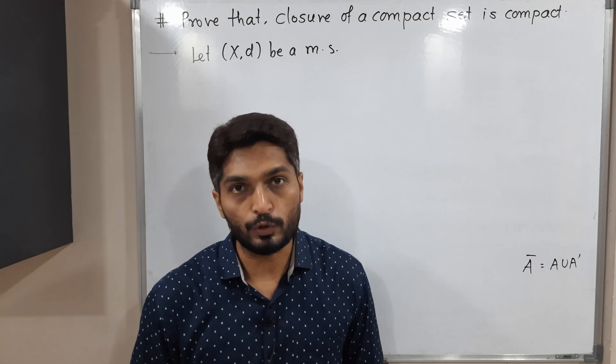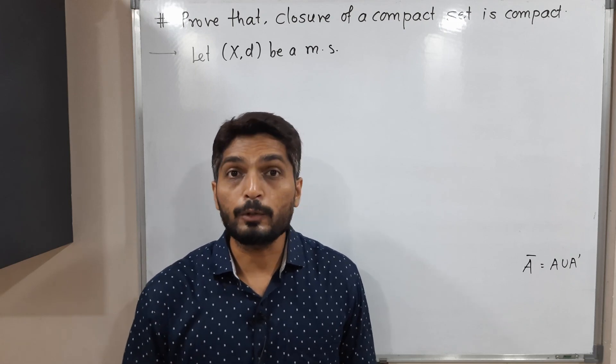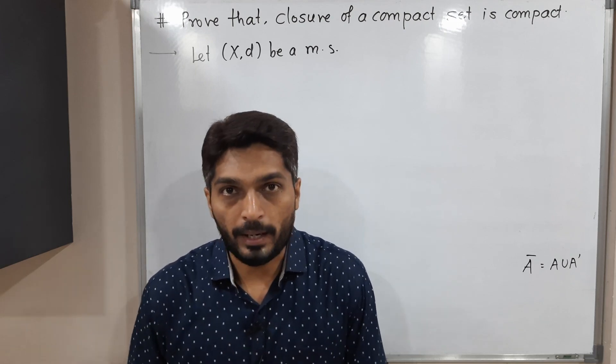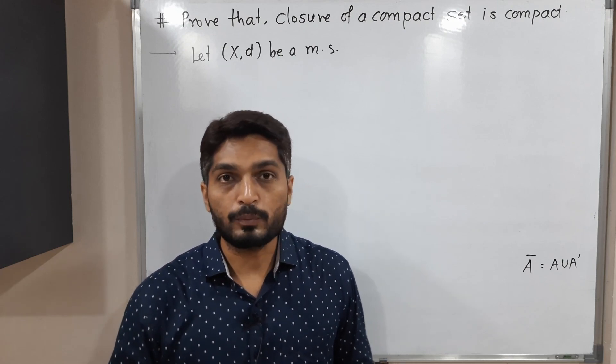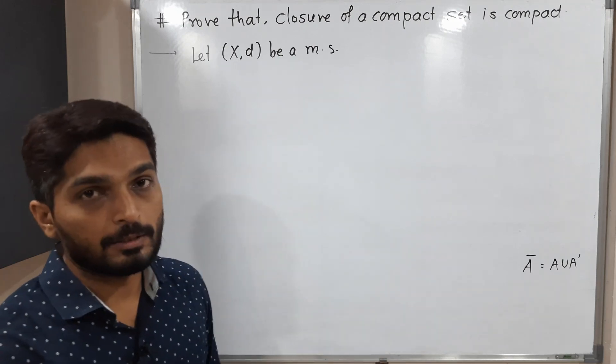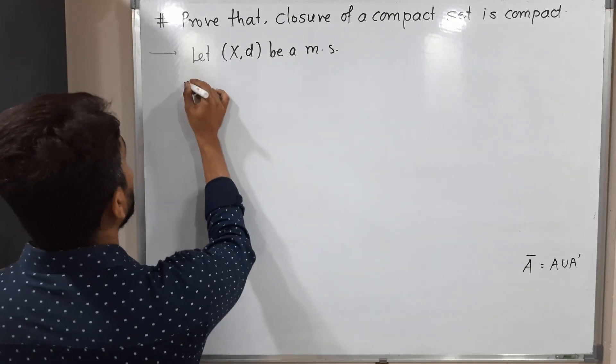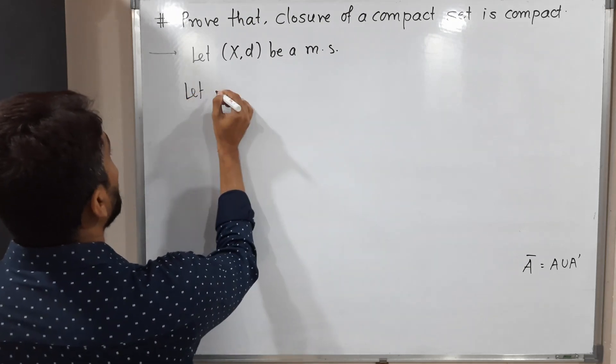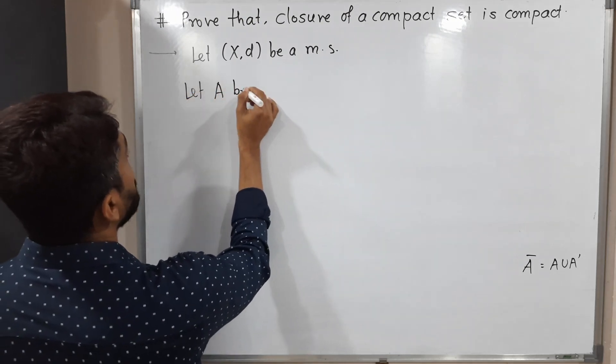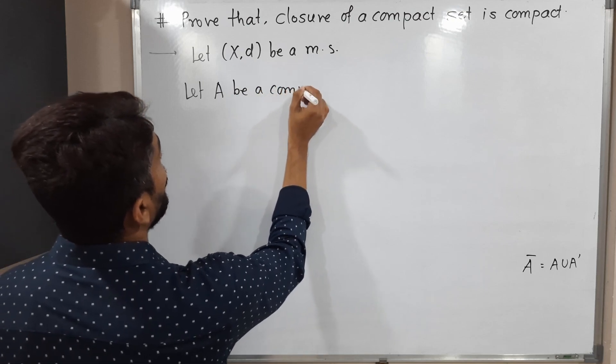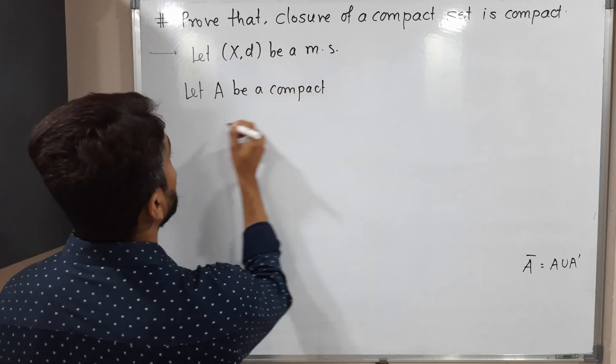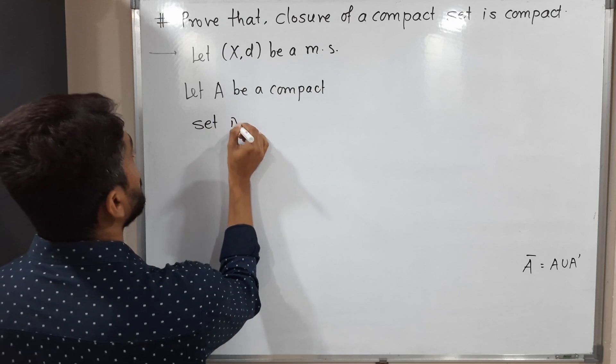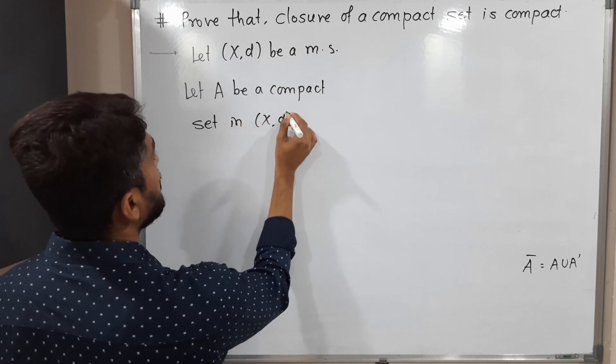If you take the union, you will have the closure of it. So we are going to prove that if the set A is compact, then A bar is also compact. Let us start with any arbitrary metric space (X,d). Let A be a compact set in (X,d). So I have considered any compact set.